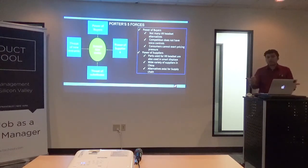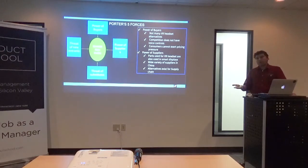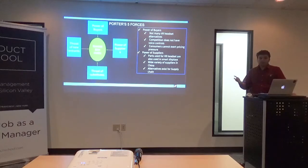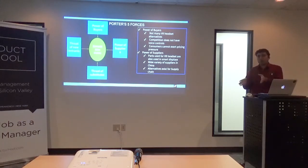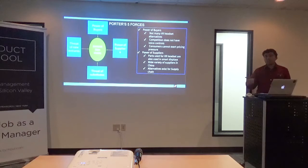Then you look at the power of suppliers. The parts used for the VR headset are also used in smart displays, and there's a wide variety of suppliers in China and other countries. Alternatives exist for your supply chain — you always protect and optimize it. The amount of money you make on a physical product is infinitely connected with your supply chain, like the iPhone — there's a certain markup and a certain amount Apple spends making the product. Which is why companies diversify and never put all manufacturing in one place. The same applies to software outsourcing — you don't want to depend on one organization. Spreading your work is great for contracts and pricing.